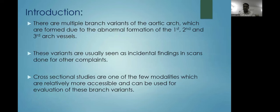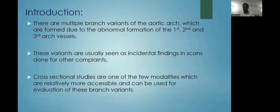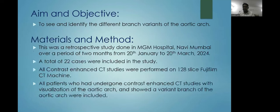There are multiple branch variants of the aortic arch which are formed due to abnormal formation of the first, second, and third arch vessels. These variants are usually seen as incidental findings in scans done for other complaints. Cross-sectional studies are one of the few modalities which are relatively more accessible and can be used for evaluation of these branch variants.